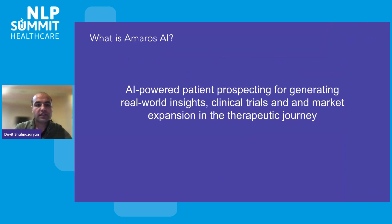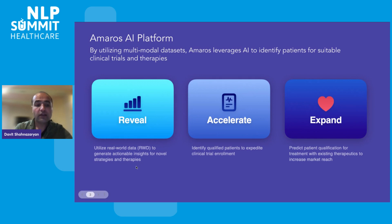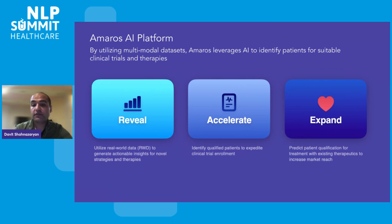At Amoros AI, we are building a powered platform for patient prospecting, for generating real world insights, for clinical trials and for market expansion in the therapeutic journey. The Amoros AI platform is utilized in three different ways. First, by utilizing multimodal datasets, we provide actionable insights from real world data for novel strategies and therapies, called Reveal. The second is Accelerate — we accelerate clinical trials by identifying eligible patients. And we also identify patients for therapeutics already in the market, which is called Expand.